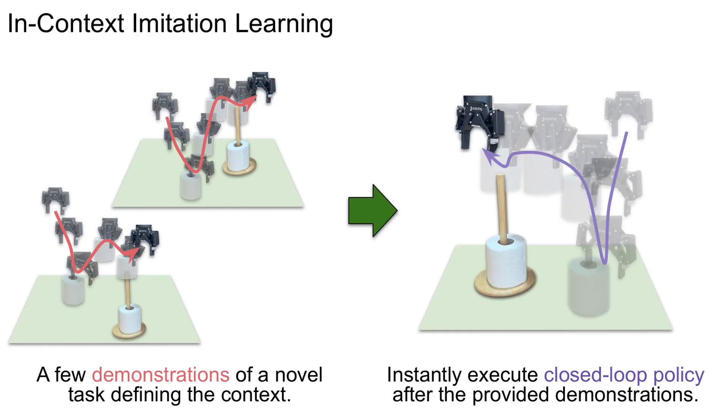We achieve this using in-context imitation learning where expert demonstrations which define the task are used as input to the model. This allows for instantaneous policy acquisition without any additional training and also circumvents the need for the model to memorize all possible tasks within its weights.